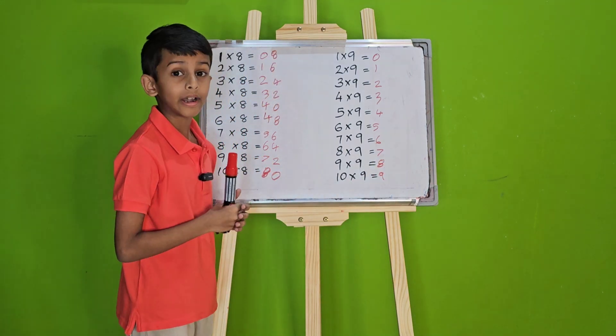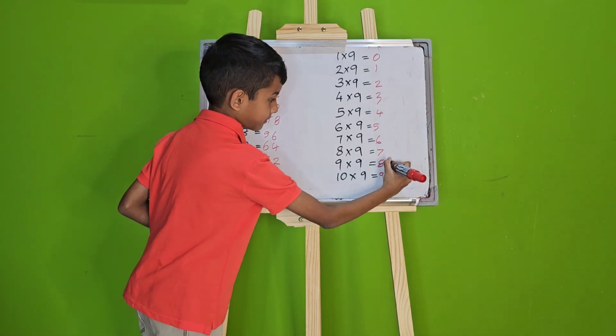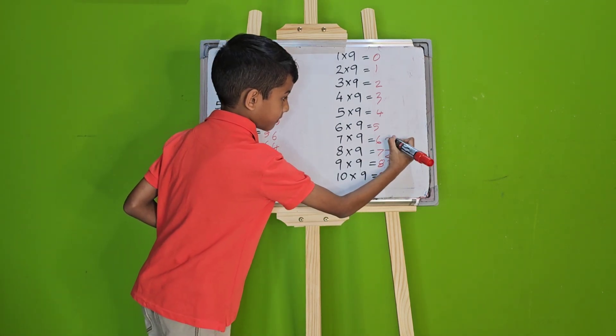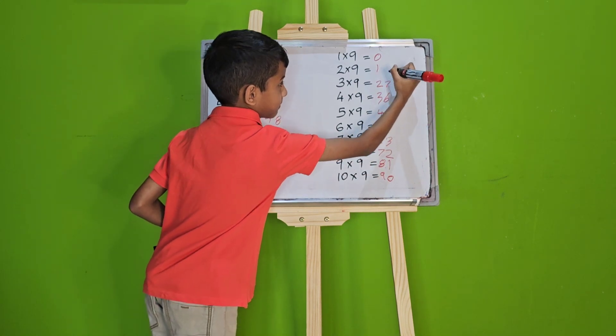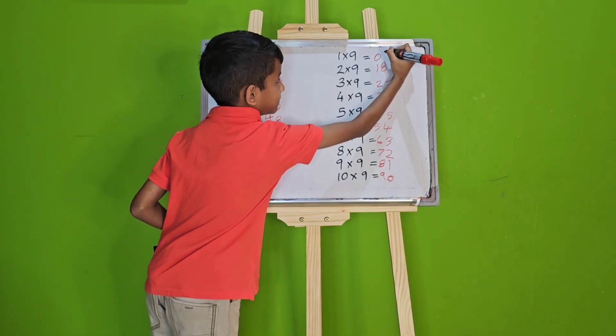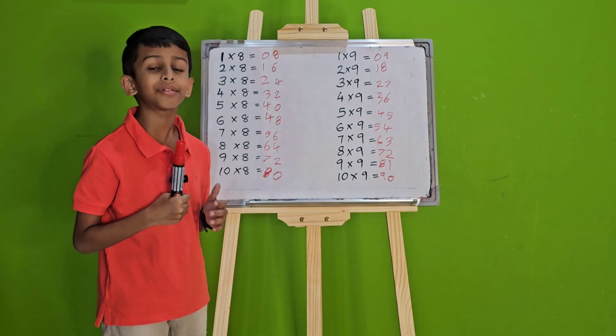Now, from 10 to 1, write 0 to 9 again. And our 9 times table is now ready.